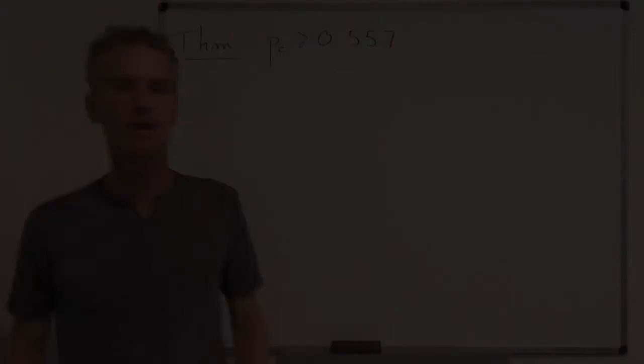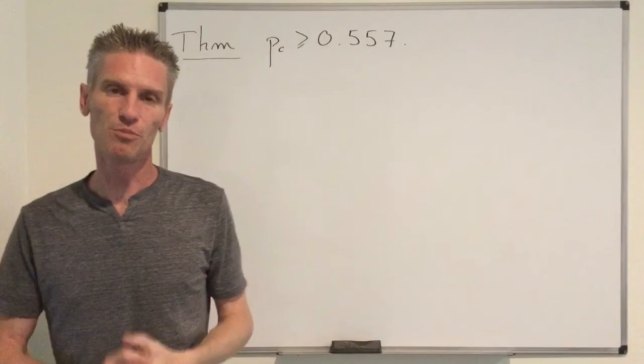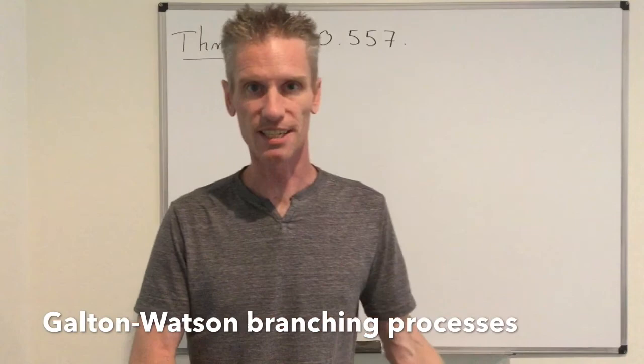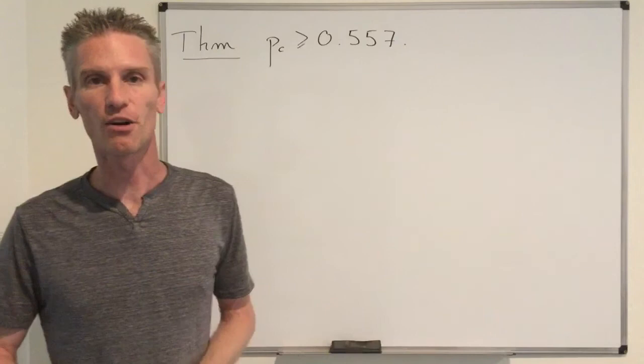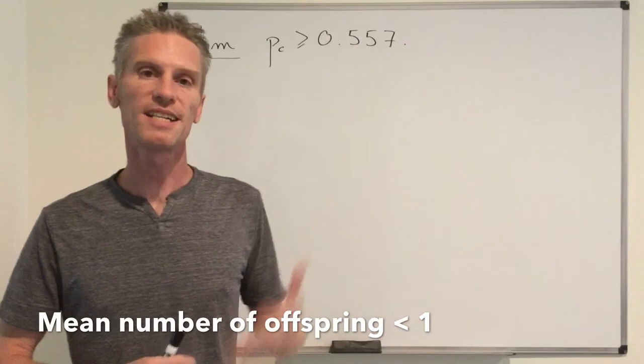Here is the inequality we want to prove. The idea of the proof is to do some kind of comparison between oriented-side percolation in two dimensions and Galton-Watson branching processes. I defined these processes in a previous playlist about martingale theory. The only result you need to know is that if the expected number of offspring per individual is strictly less than one, then the process goes extinct with probability one.